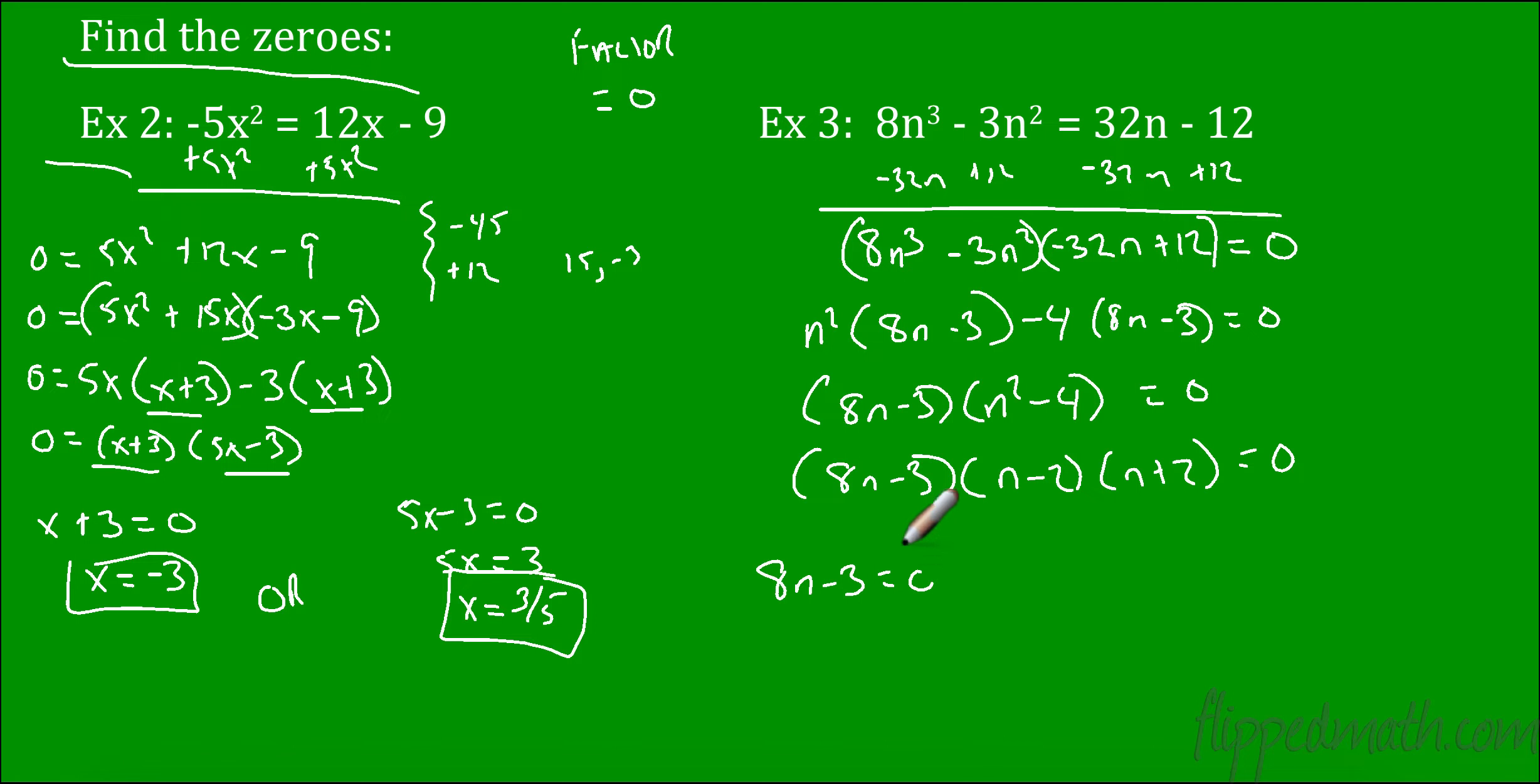8n minus 3 equals 0, that's 1. Or it could be n minus 2 equals 0. Or it could be n plus 2 is 0. Because if any one of these three factors is 0, when I multiply, it's going to equal 0. So let's do this first one. Add 3, 8n equals 3. Divide by 8, 3 eighths is my first answer. This one, add 2, could be 2. Subtract 2, negative 2. There we have it.